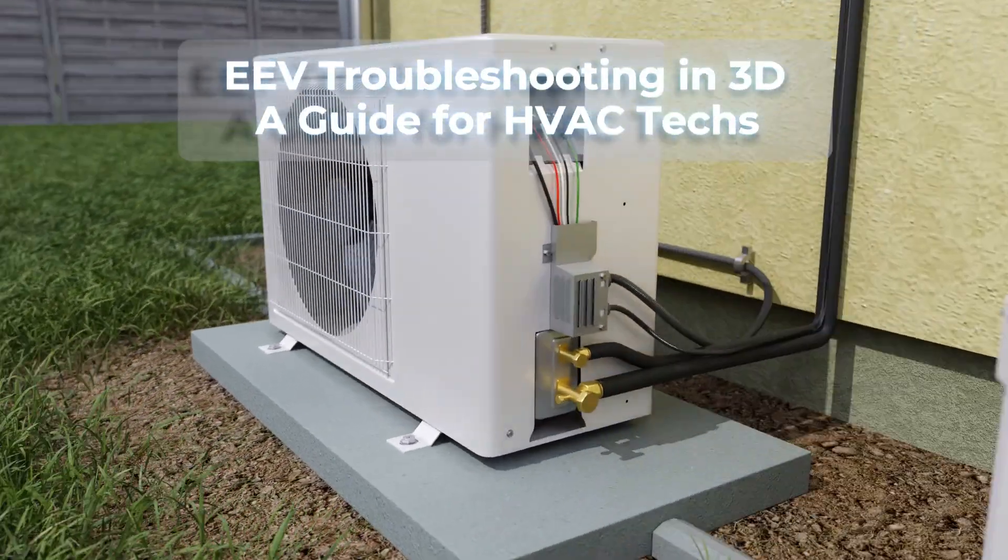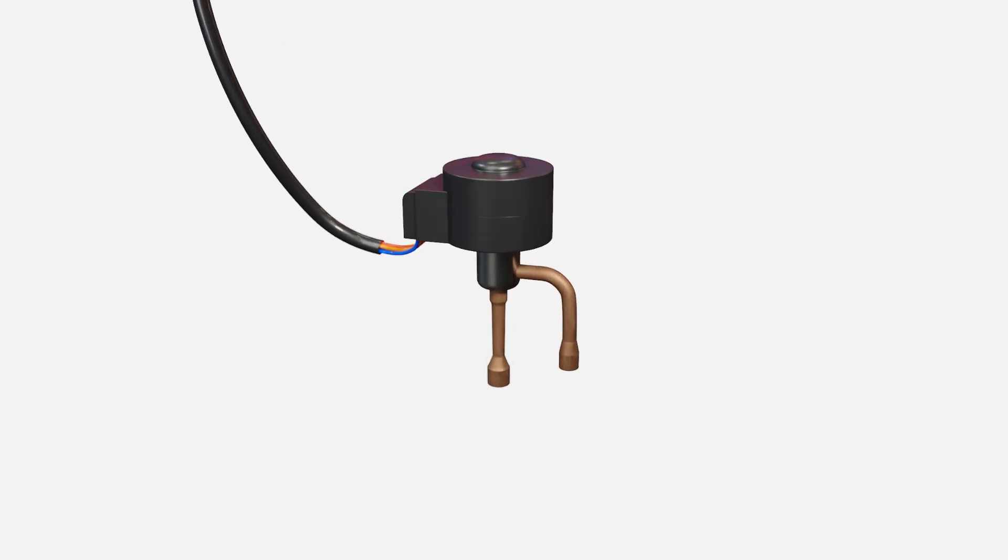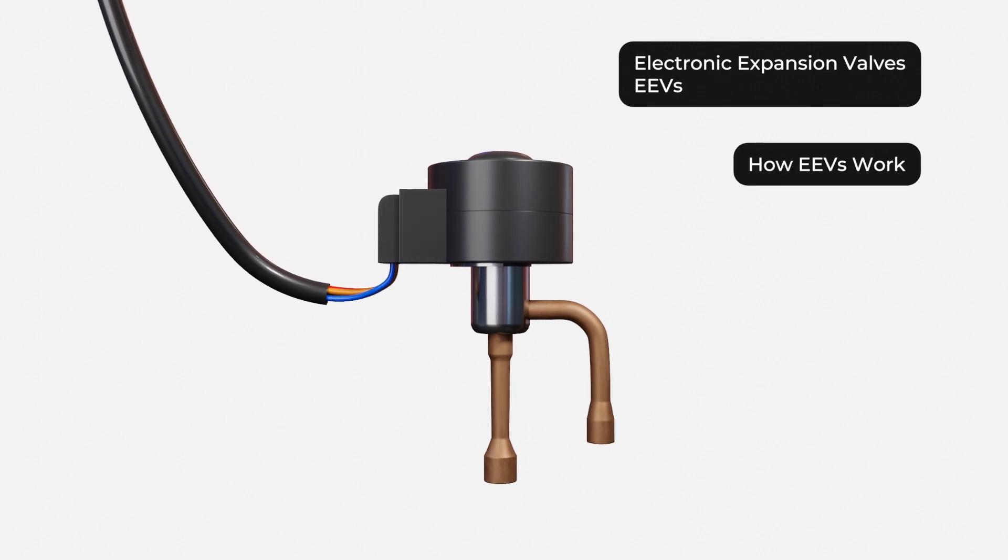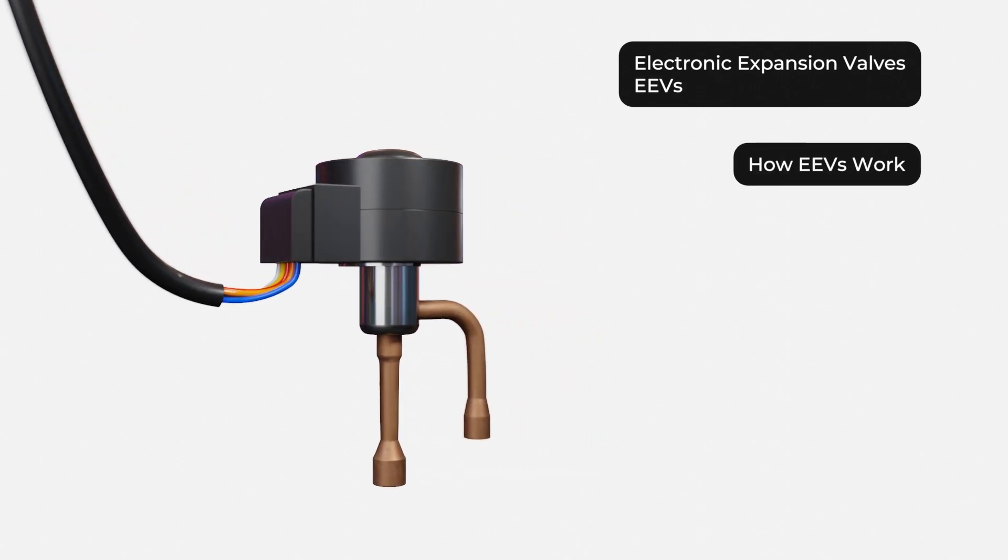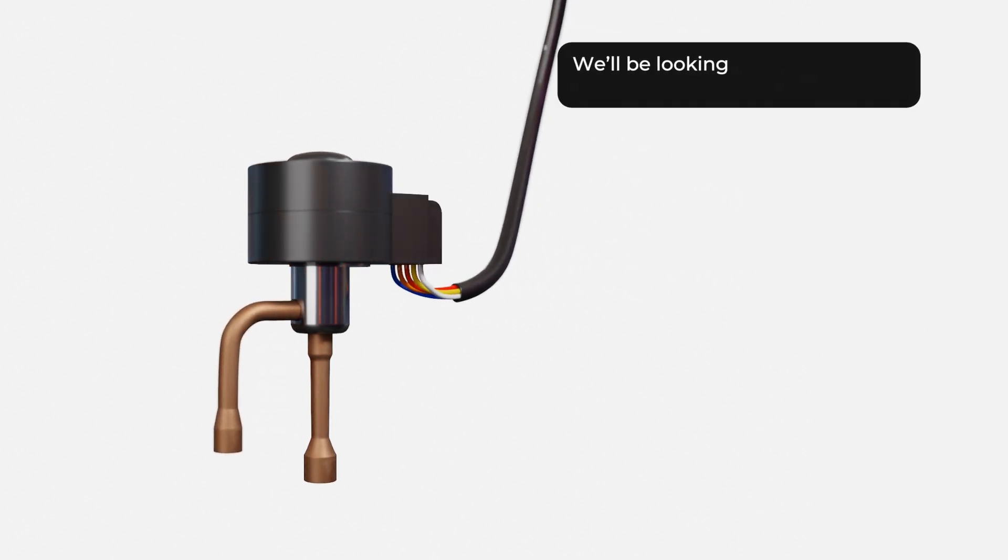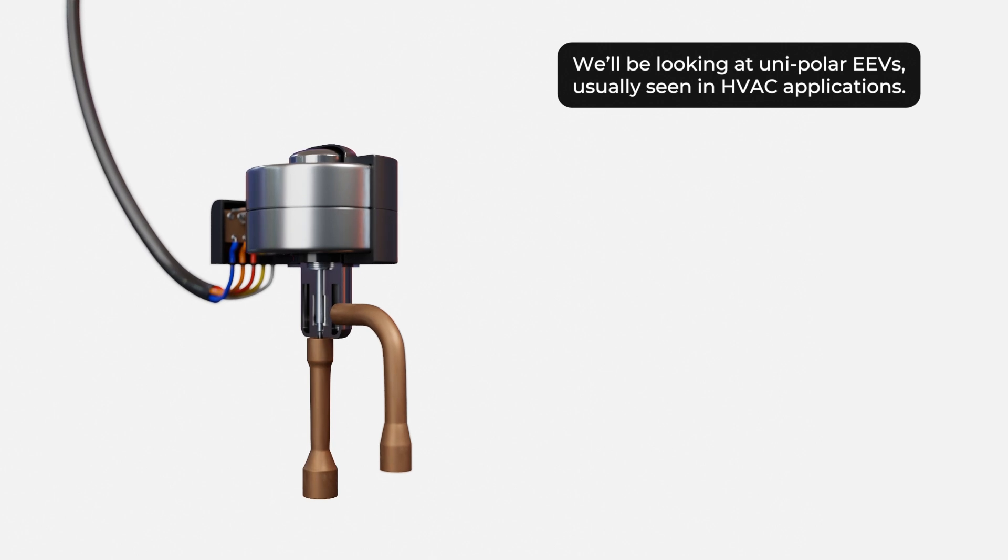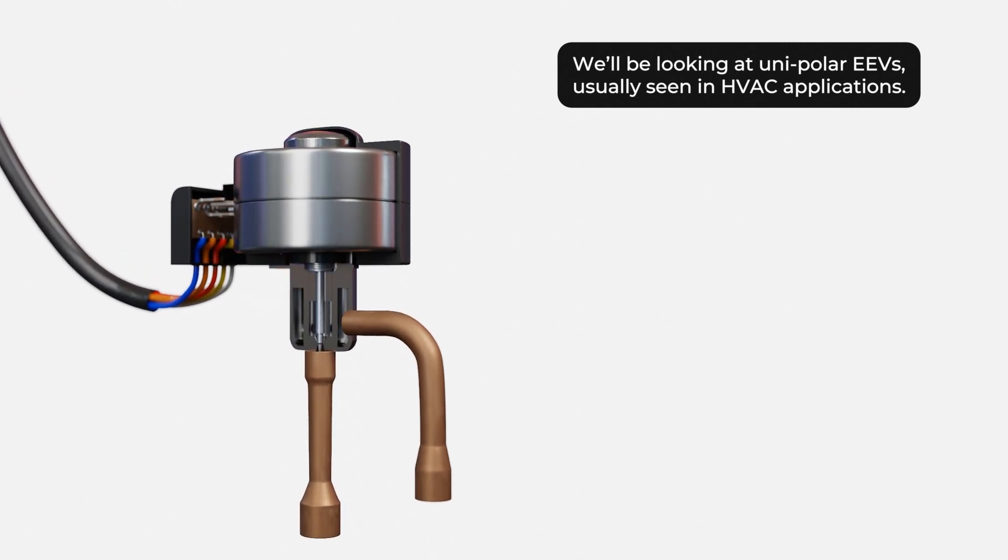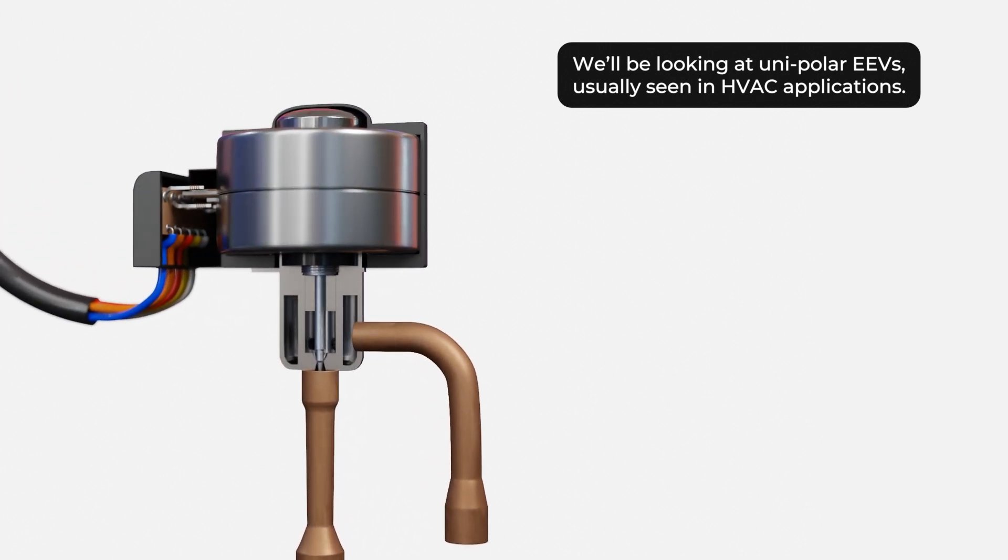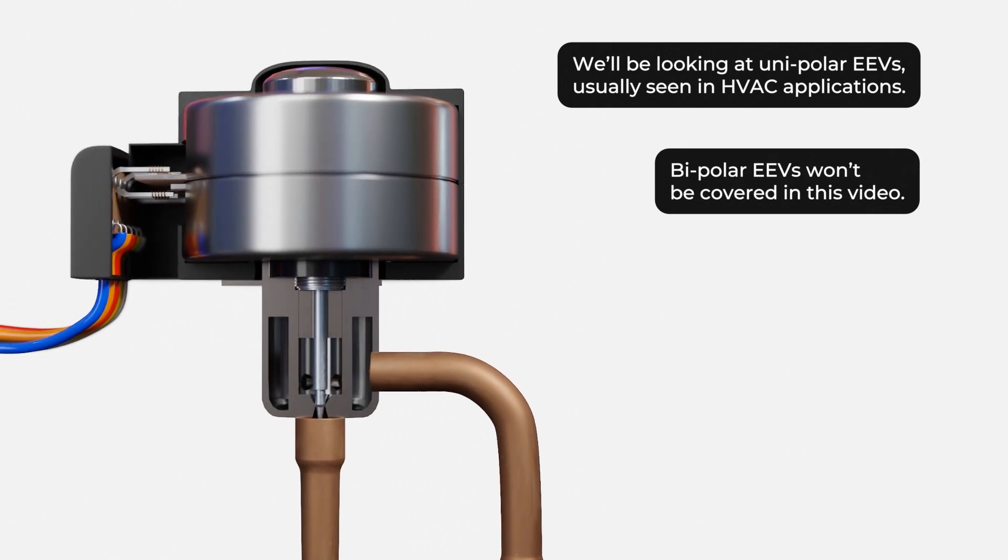In this video we will be looking at how an electronic expansion valve or EEV works in an HVAC system. We'll also cover some common issues and how to troubleshoot them. We will be looking at unipolar EEVs which we usually see in HVAC applications. These are a bit different from the bipolar EEVs we see in commercial refrigeration applications and we won't be covering those in this video.